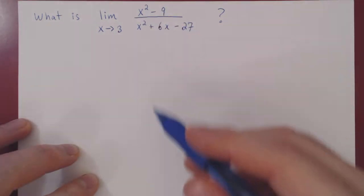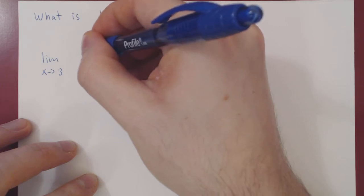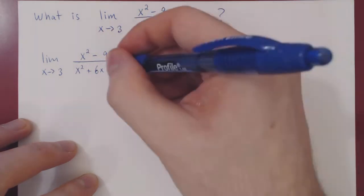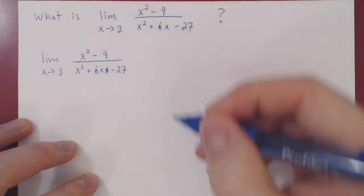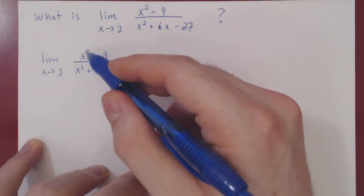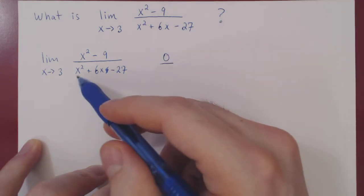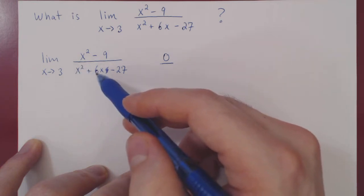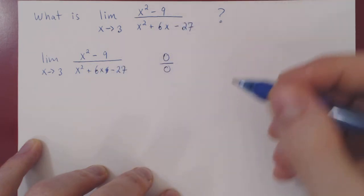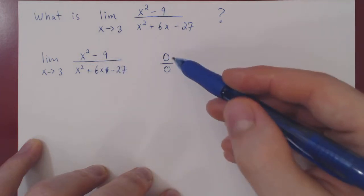Let's first try and get a feeling for it. As x approaches 3, x squared will approach 3 squared, which is 9. 9 minus 9 is 0, so our numerator is approaching 0. What about our denominator? 3 squared is 9, plus 6 times 3 which is 18, so 9 plus 18 is 27, minus 27 is 0. So as x approaches 3, both our numerator and our denominator are shrinking to 0.